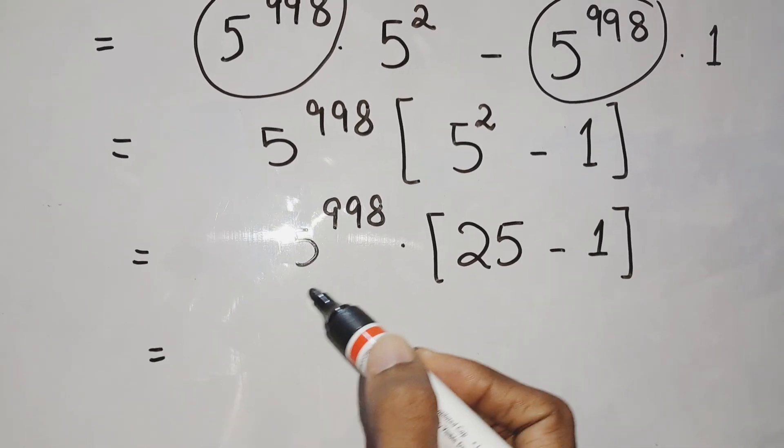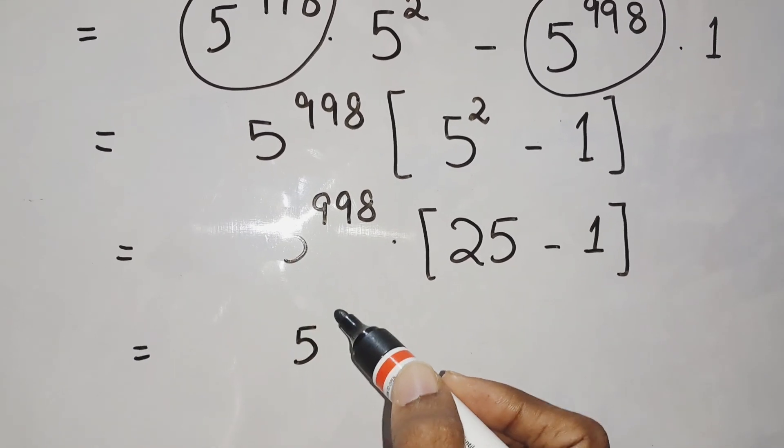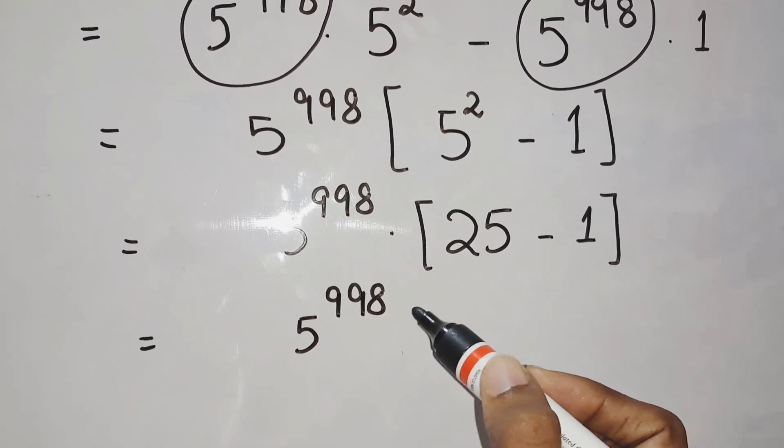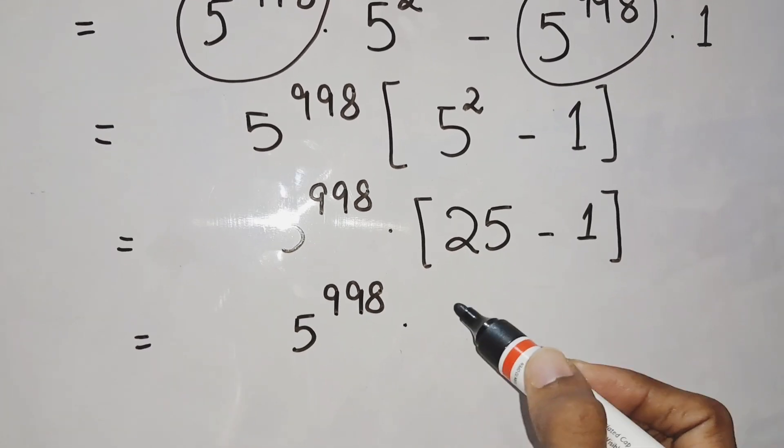So 5 to the power 998 as it is, and the bracket term is 25 minus 1, which is nothing but 24.